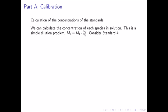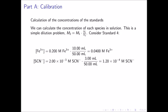We will now calculate the concentrations of each species in the standard. Recall that this is a simple dilution problem where the concentration in the standard is equal to the concentration of the stock times a simple dilution factor. We will look at standard number 4. The iron 3+ concentration begins with the 0.200 molar stock concentration, then we multiply by the dilution factor of 10 milliliters over the total volume of 50 milliliters, resulting in a concentration of 0.0400 molar ferric ion. For the thiocyanate ion, we begin with the 2.00 times 10 to the negative 3 molar stock and multiply by the dilution factor of 3 milliliters over 50 milliliters, giving 1.20 times 10 to the negative 4 molar thiocyanate ion.